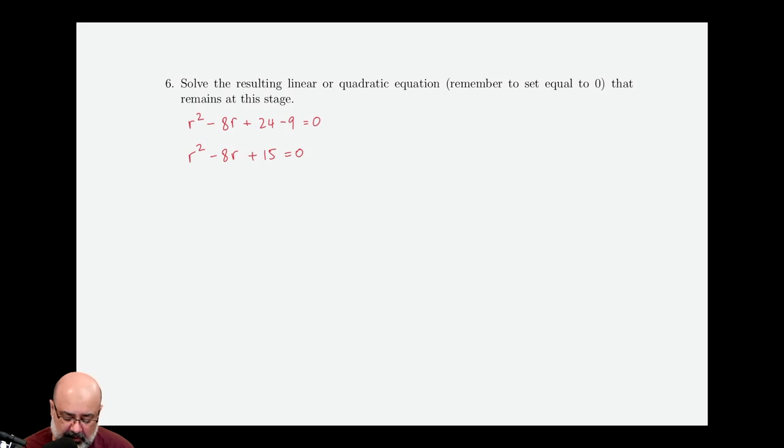But do you have perfect squares? So I can take the square root of r squared, but I cannot take the square root of 15. So the formulas are out. And then we move on to what's the leading coefficient? Is the leading coefficient one? Sure is, which means I can use the AC method. So for the AC method, we find factors of 15.